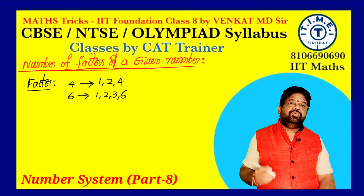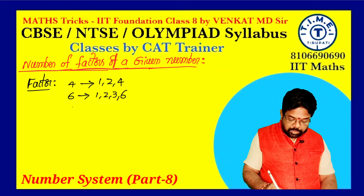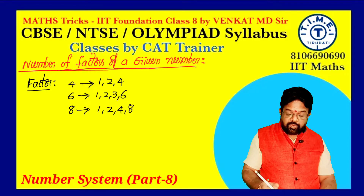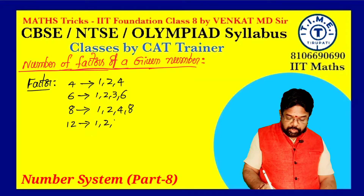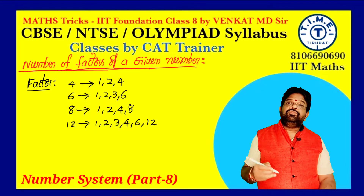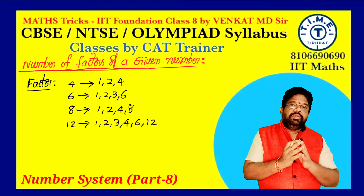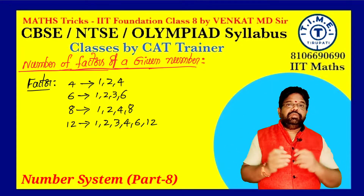So for 6, how many factors are there? 4 factors are there. Suppose for 8 — 1, 2, 4, and 8 — 4 factors are there. Suppose 12 — it is divisible by 1, 2, 3, 4, 6, and 12. So 6 factors are there for 12. Factors means a particular number is exactly divisible by which numbers — those are called the factors of a given number.